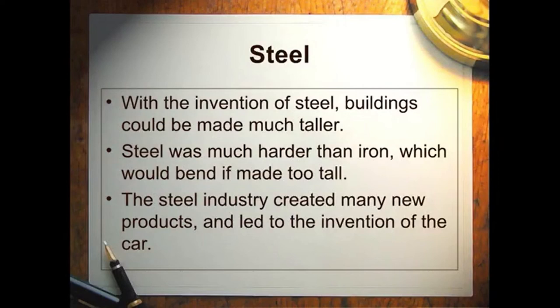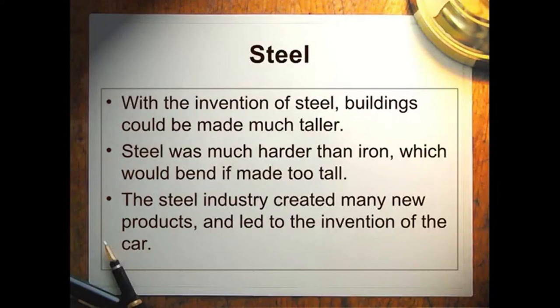Steel is much stronger and much more preferable to iron, and because of the Bessemer process it gets significantly cheaper to make. With wooden buildings, they caught on fire and would take up half a city because everything was made of wood. With iron, you could only build so tall because the wind would blow and iron's not strong enough — you can put enough pressure on an iron rod and it bends. Buildings would sway and with iron, sometimes they'd just not sway back — they'd weaken and fall over.